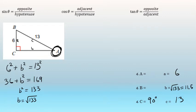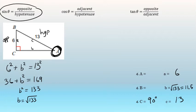To find the measure of angle A and angle B, we will use trigonometry. Looking at the triangle with respect to angle A, the opposite side was given — the side opposite angle A is exactly 6, and the hypotenuse, the side across from the right angle, was also given. To find the measure of angle A, we'll use the trig function that relates those two given sides, opposite and hypotenuse. The sine ratio relates opposite and hypotenuse. The sine of angle A is its opposite side over its hypotenuse — in this case, 6 over 13.